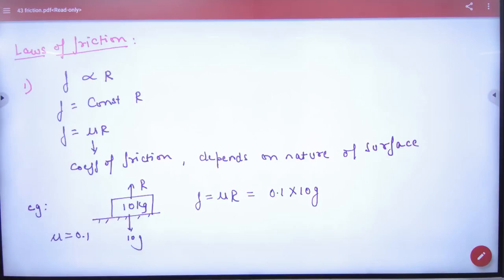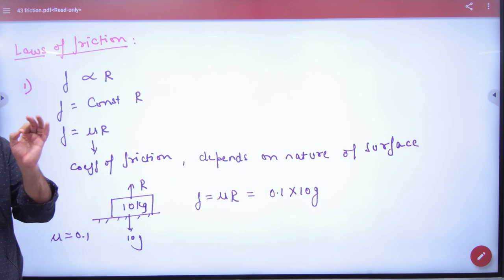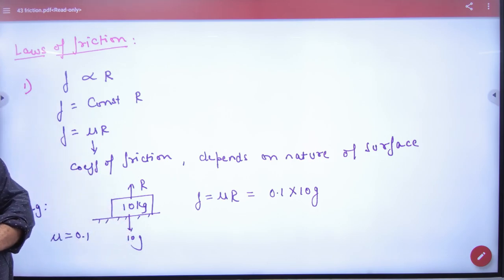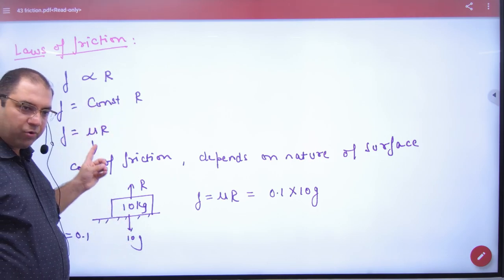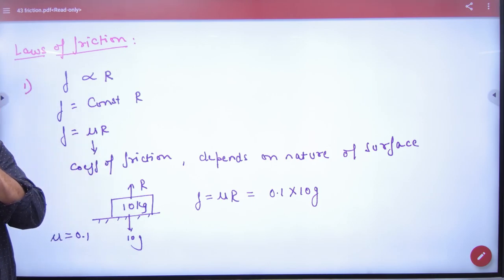So in the laws of friction, the first law: force of friction depends on the normal reaction. The force of friction will be constant for the normal reaction. It represents mu roughness, so f is equal to mu into R.